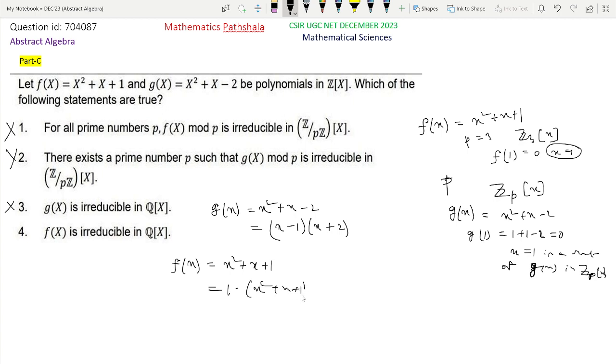1 is a unit. Clearly, actually, as f is a polynomial of degree 2 and Q is a field, f(x) is irreducible in Q[x] if and only if f does not have a root in Q. As f does not have a root in Q, f(x) is irreducible in Q[x]. So option 4 is the correct option.